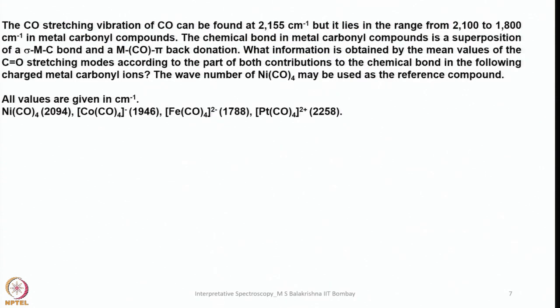Now, for further analysis: you are already familiar with CO stretching frequencies. The free carbon monoxide shows at around 2150–2155 cm⁻¹ — the value varies from book to book between 2130 and 2160, but the precise value is around 2147 cm⁻¹. The stretching frequency of free CO is always greater than what we see in metal carbonyls unless there is no back-bonding at all; in metal carbonyl compounds the range is 2100 to 1800 cm⁻¹.